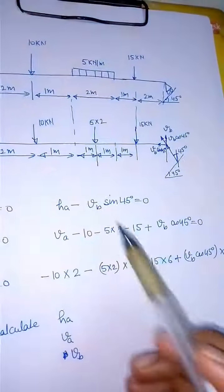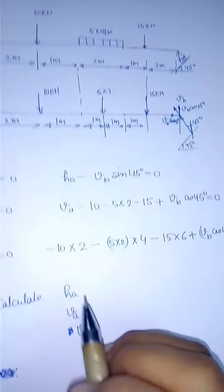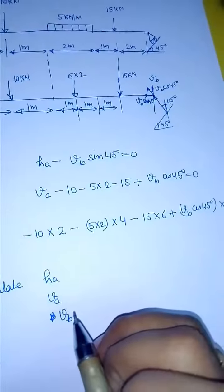This has been taken as negative. You can use these three equations to get the value of HA, VA, and VB.